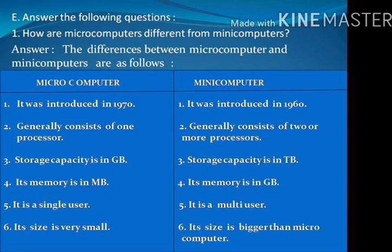Microcomputers. Number 1: Microcomputers were introduced in 1970, but minicomputers were introduced in 1960. Number 2: Microcomputers generally consist of one processor, but minicomputers generally consist of two or more processors.